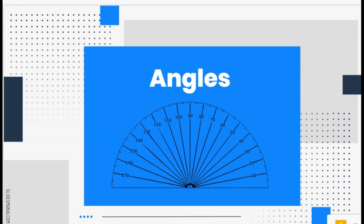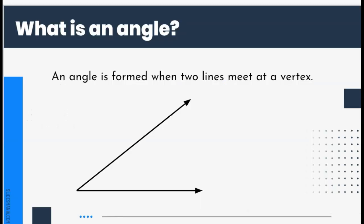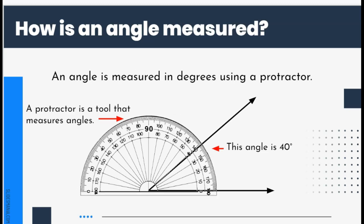Let's learn about angles. An angle is formed when two lines meet at a vertex. An angle is measured in degrees using a protractor — this tool is a protractor and it is used to measure angles.